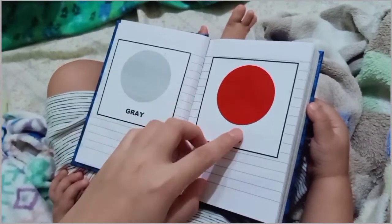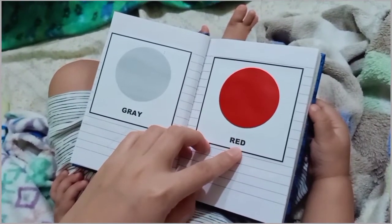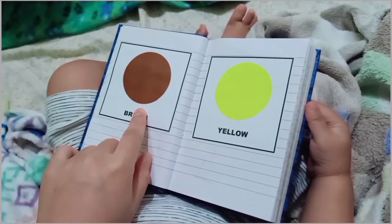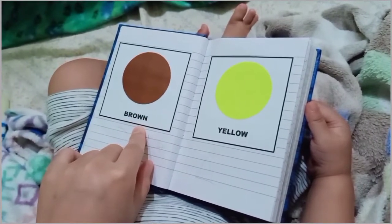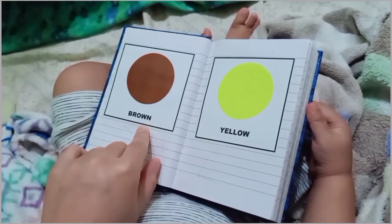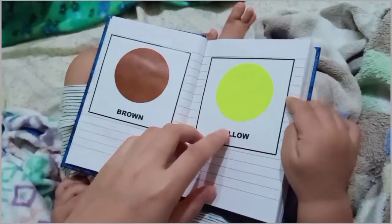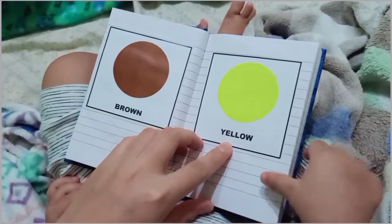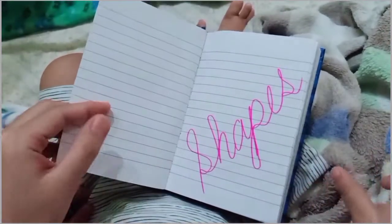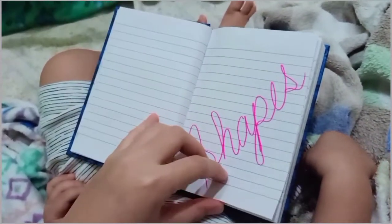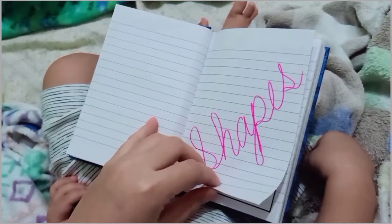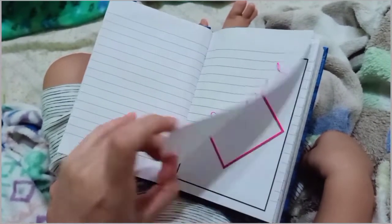This one? Gray. Gray. What about this? Red. Red. Very good. This one? Brown. Brown. Very good. This one? Yellow. Very good. Okay, let's learn the different kinds of shapes. What shape is this?